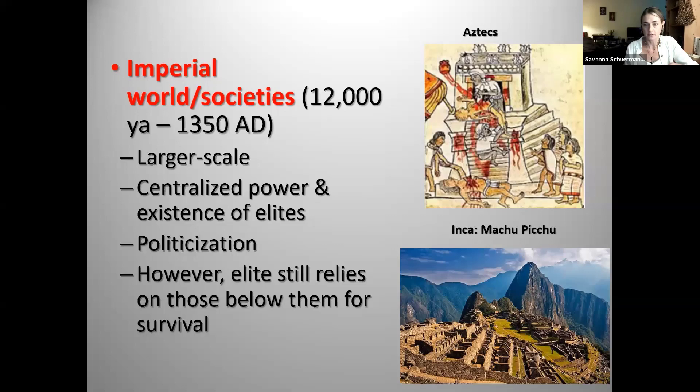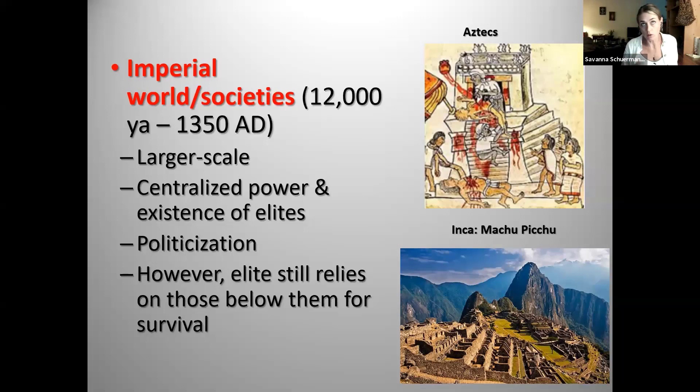Imperial societies emerged with agriculture 12,000 years ago in different places, repeatedly growing and eventually collapsing. These cycles repeat until about 1350 AD. At this time, trade, colonialism, travel, missionization — basically the first stages of globalization — start happening. The world starts becoming more interconnected, which eventually allowed the emergence of fully fledged commercial society.